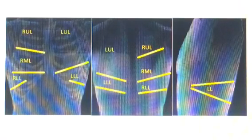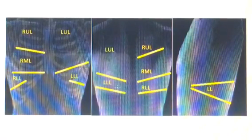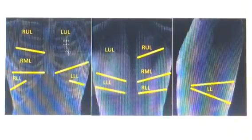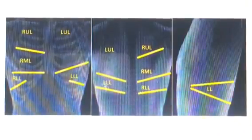Diminished or decreased breath sounds is really a relative term — decreased or diminished as opposed to the normal airflow you would expect to hear. This is especially useful when compared from the right to the left side. For example, post intubation, is the left side decreased as opposed to the right side? This can mean the endotracheal tube is inserted too far. If there are decreased breath sounds in the right lower lobe as opposed to the left lower lobe, consider some sort of consolidation in the right lower lobe.